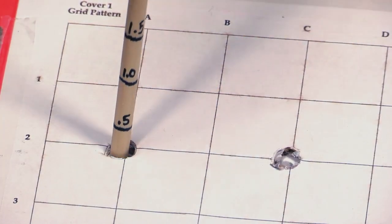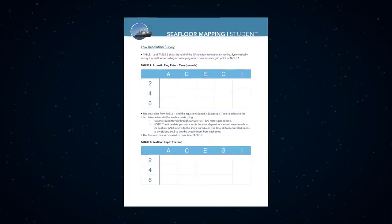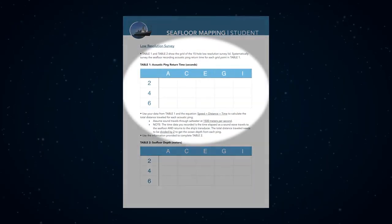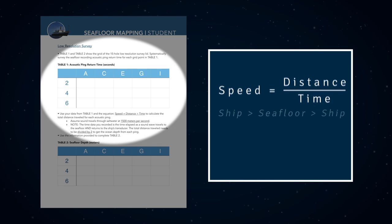In Trial 1, students use a dowel to measure the seafloor through the low resolution lid, recording data on Student Worksheet 1. Students will use these measurements in the provided equation, speed equals distance divided by time, to calculate the ship to seafloor to ship distance from their time data.